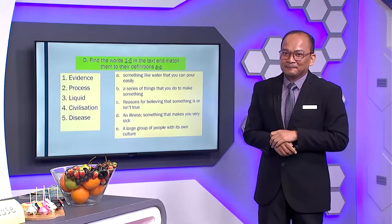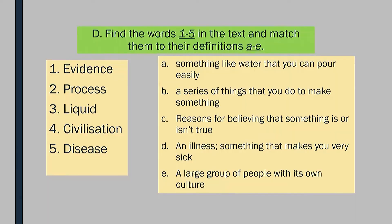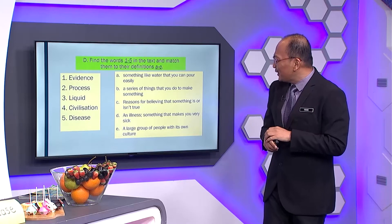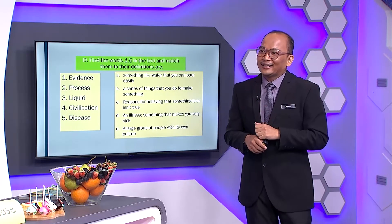All right, everyone's ready! So Sean, would you like to start first with the matching? Sure, I can give it a go. Word number one is 'evidence.' I think it matches with C — 'reasons for believing that something is or isn't true.' So number one, the answer is C: a reason for believing that something is or isn't true. That is correct! Congratulations!